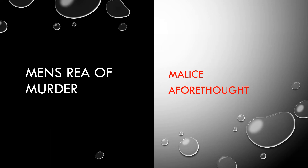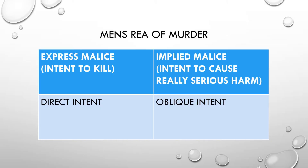Once we've established these elements, write a mini-conclusion: does the actus reus of murder exist? If it does not, go no further. If it does, the mens rea needs to be proven. Malice aforethought means either intent to kill or intent to cause really serious harm. In the scenario, choose one: it's either intent to kill or intent to cause serious harm, and then either direct or oblique intent for each.